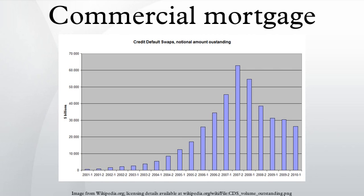Loan structure: Commercial mortgages can be structured as first liens or, if a greater loan amount is desired, the borrower may be able to obtain subordinate financing as well, sometimes structured as a mezzanine note or as preferred equity, which generally carries a higher interest rate.